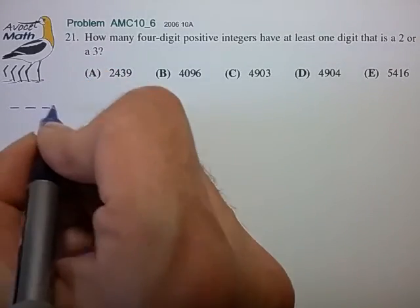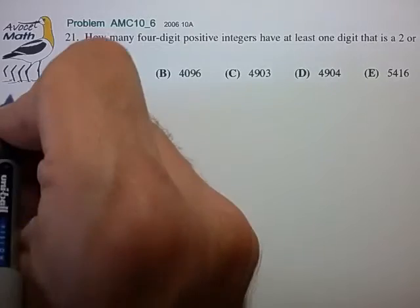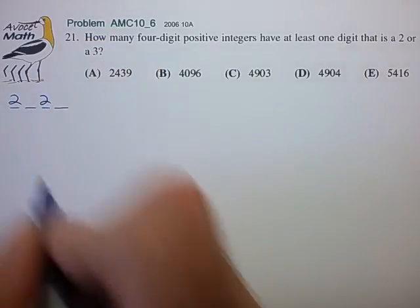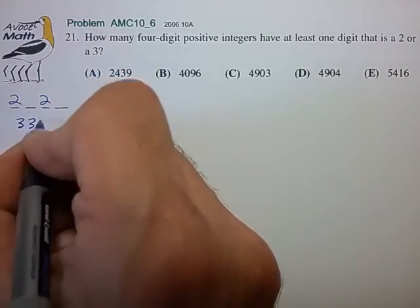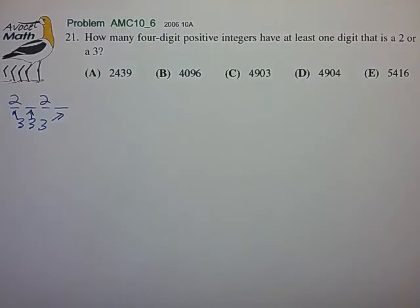We basically have a four-digit number, and in order to count this set directly, we'd have to keep track of how many twos we have and which locations they may be in, how many threes we have and which locations they might be in, and this seems like a very difficult counting problem.